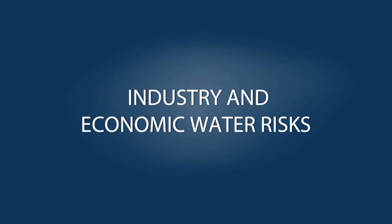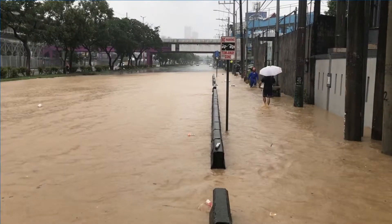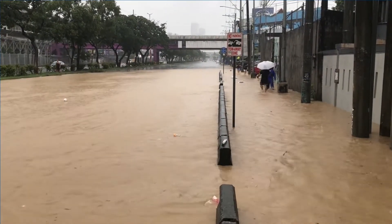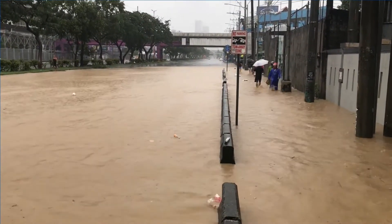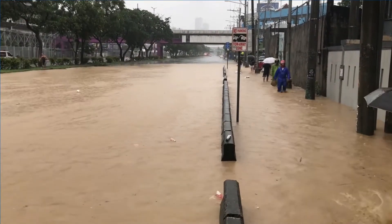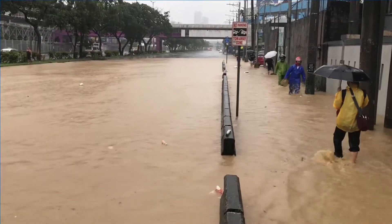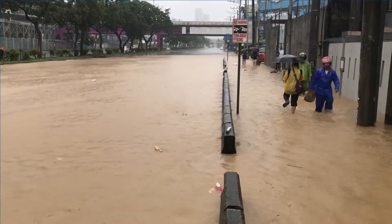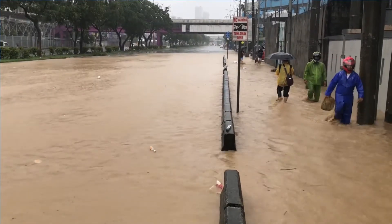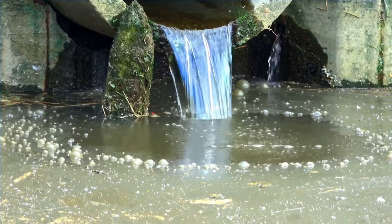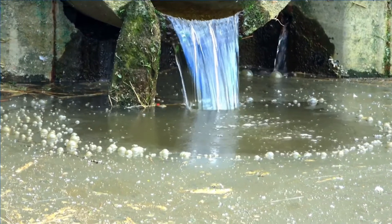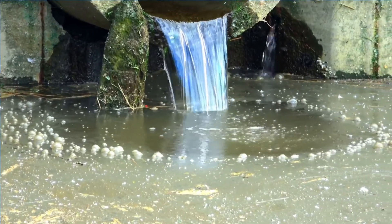Industry and Economic Water Risks. The World Bank estimates that by 2050, water scarcity in some regions could impact GDP growth by up to 11.5%. Since 2000, flood-related disasters have increased by 134%, impacting transportation networks and disrupting the supply chains of several major industrial sectors. Freshwater shortages and pollution limit industry and agricultural production and disrupt global supply chain networks and the economy in significant ways.